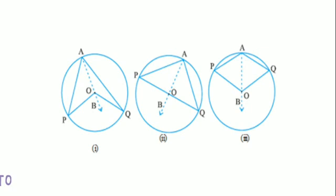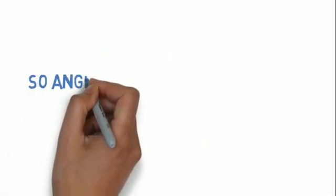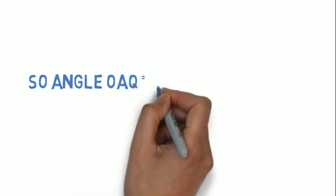This is because angles opposite to equal sides of a triangle are always equal. Now, I will only write what I have told you and nothing else.